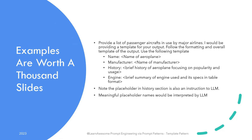Let's go over a few examples to understand this better. One example is studying passenger airplanes and wanting information presented in a particular format. The prompt would be: "Provide a list of passenger aircrafts in use by major airlines. I will be providing a template for your output. Follow the formatting and overall template. Use the following template: Name: <name of airplane>, Manufacturer: <name of manufacturer>, History: brief history of airplane focusing on popularity and usage, Engine: brief summary of engine used and its specs in table format."